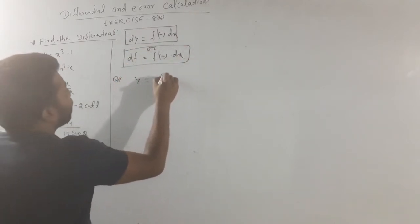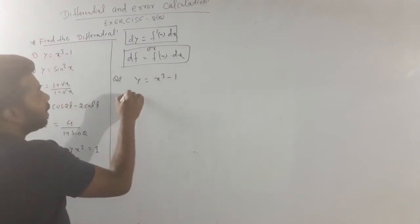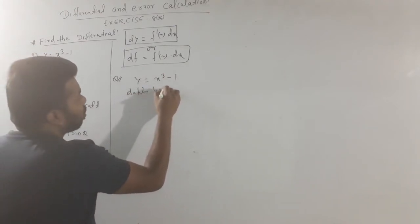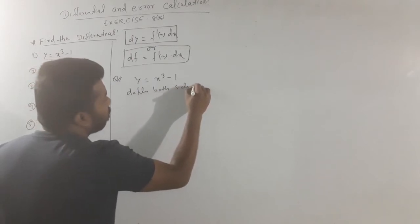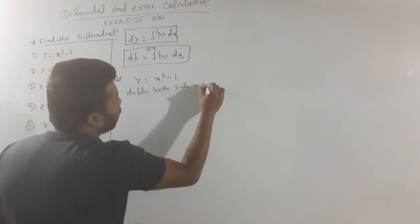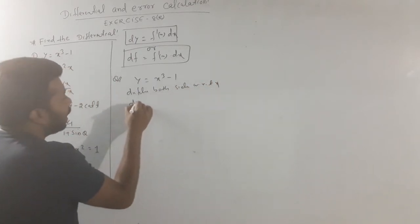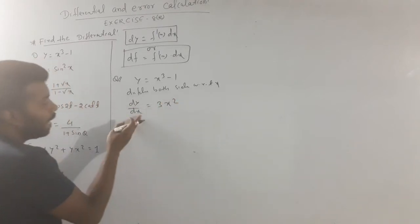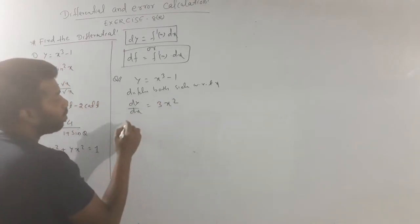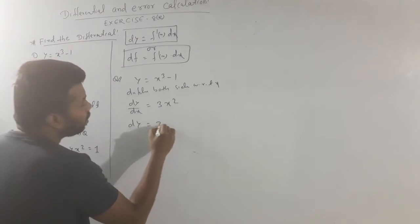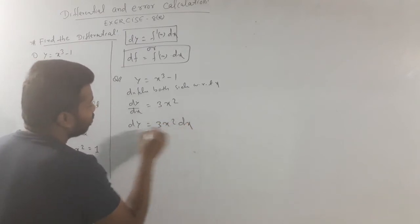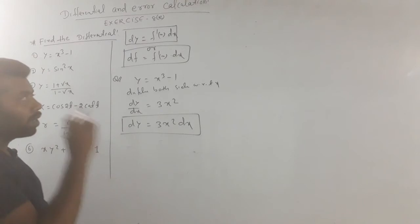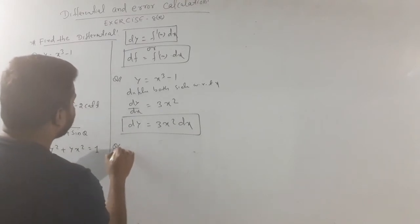Next question: y is equal to x cubed minus 1. Differentiate both sides with respect to x. dy by dx is equal to 3x squared. So dy is equal to 3x squared dx.